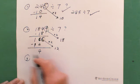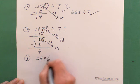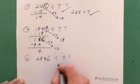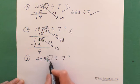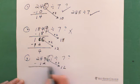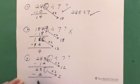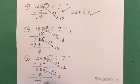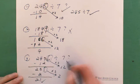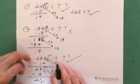Another example: is 2436 divisible by 7? Double the last digit 6, multiply by 2, you get 12. Subtract 12 from the number formed by the rest of the digits. You get 231. Continue: double 1 to get 2, subtract from 23, you get 21. Since 21 is a multiple of 7, you can stop. So 2436 is divisible by 7.